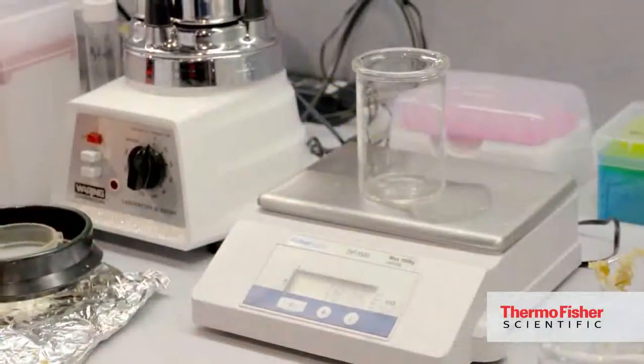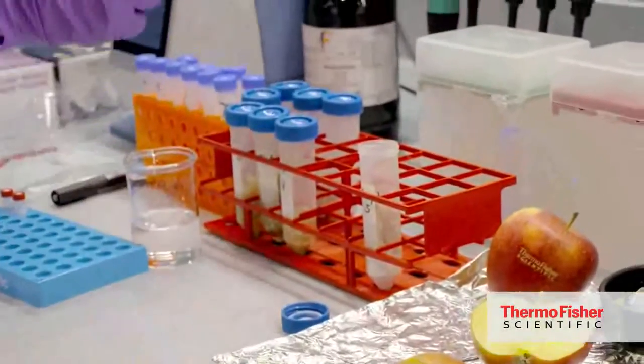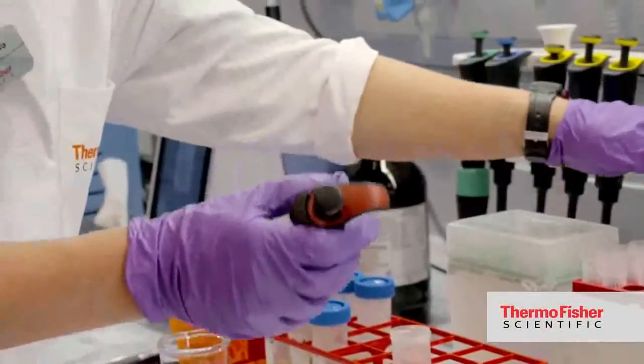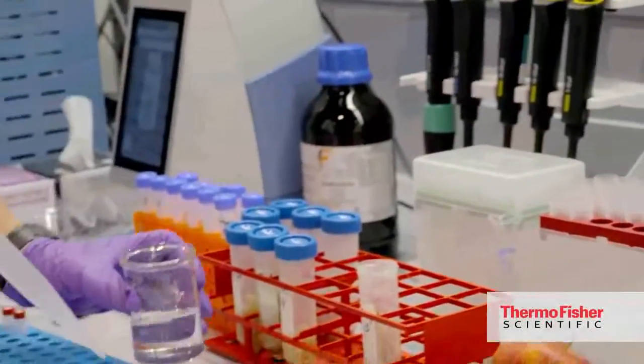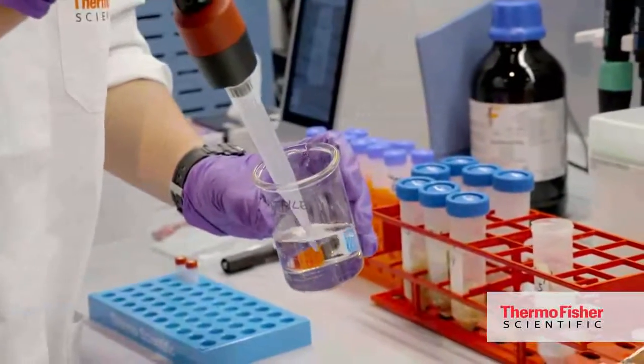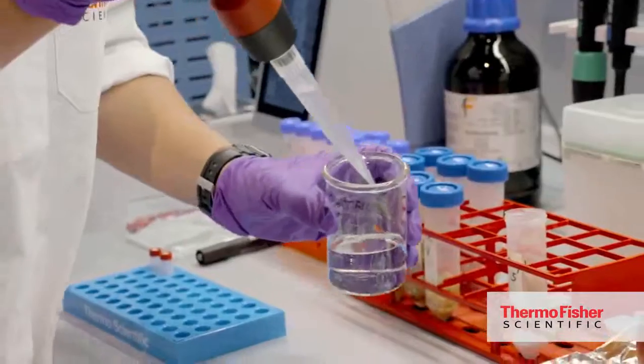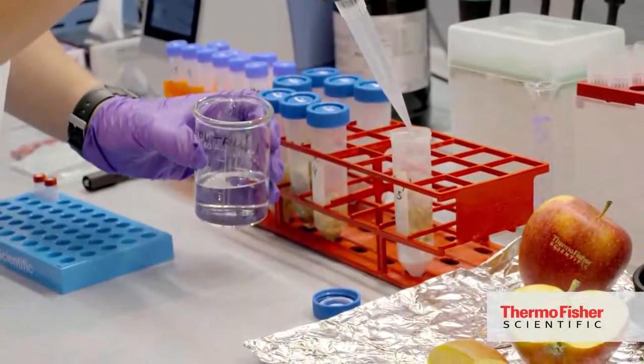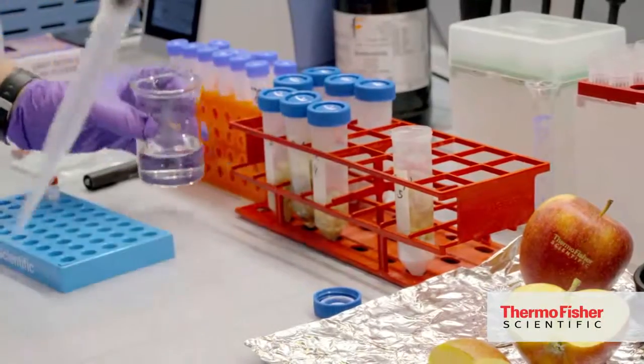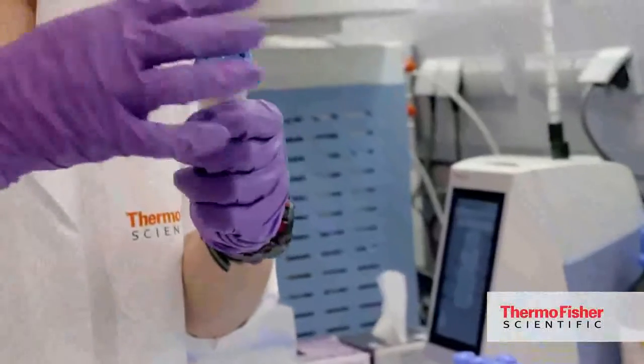So when the sample is weighed, then extraction solvent will be added to it. To 10 grams of sample, we add 10 milliliters of solvent. And the whole tube will be shaken.